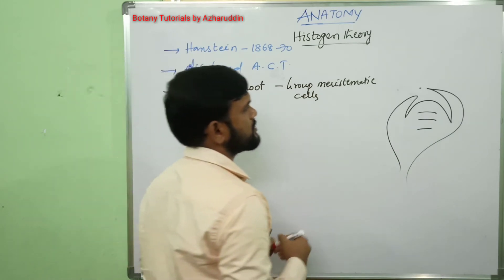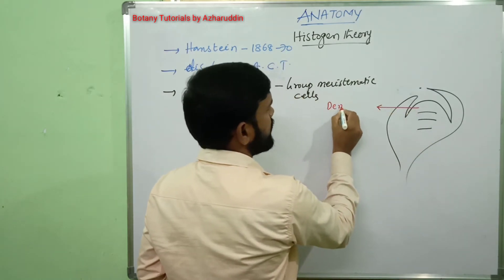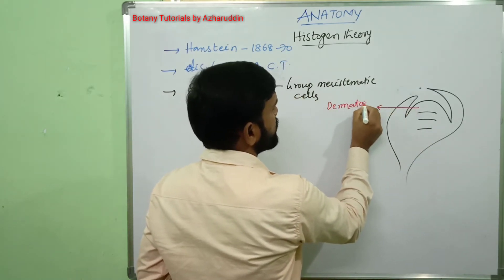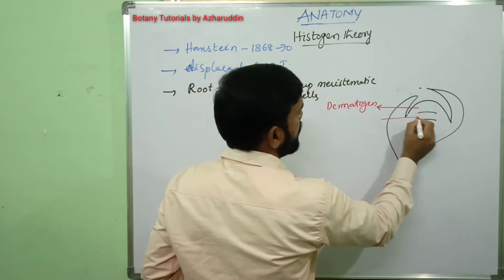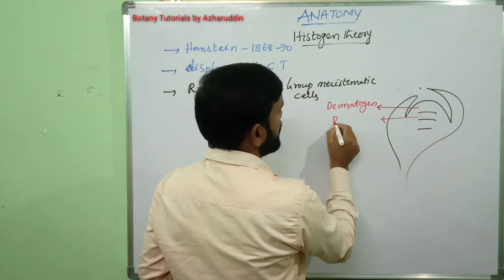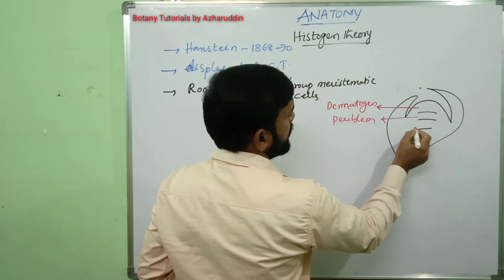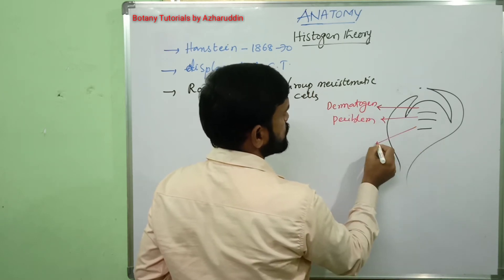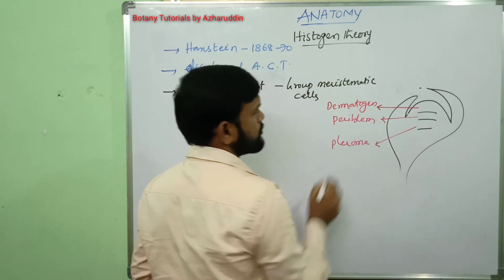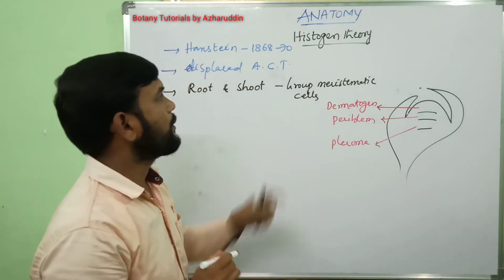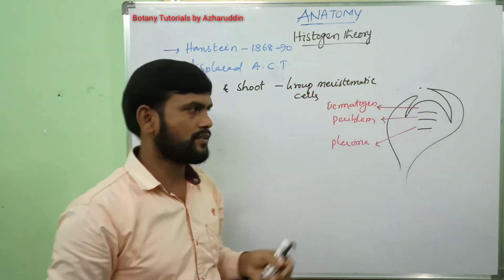The outermost zone is called dermatogen. The middle zone is called periblem. And the innermost zone is called plerome. These three zones are present in the meristematic tissue of the root apex or shoot apex.